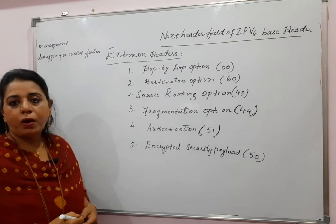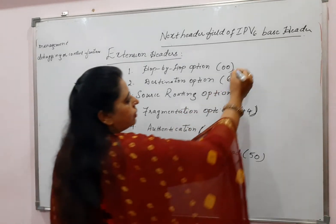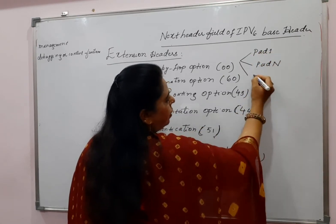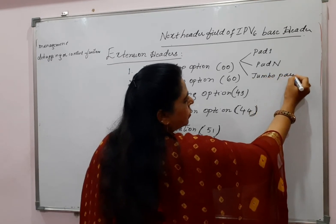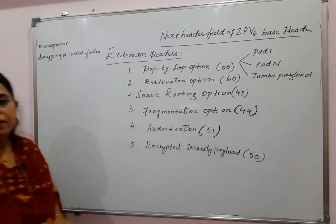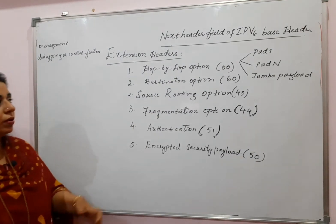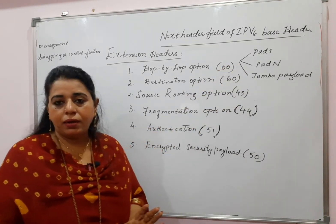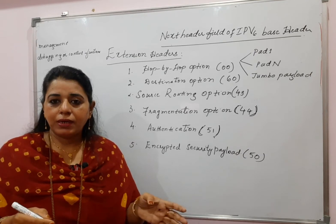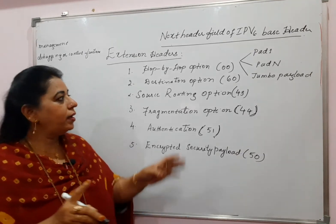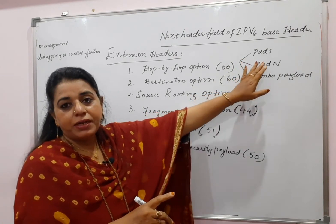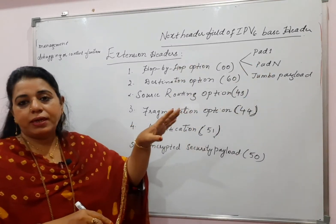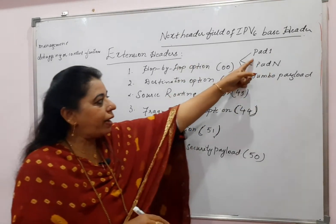The first one is the hop-by-hop option. The hop-by-hop option consists of three different sub-options: pad one, pad N, and jumbo payload. Pad one and pad N are used for alignment purposes. If a particular option has a shortfall of one byte, we use pad one. If the shortfall is more than one byte, we use pad N.